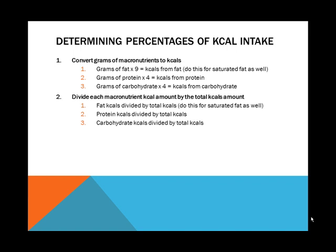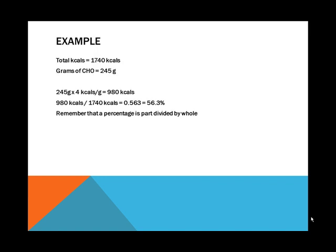Once we do that, if we know the total calories, we just divide the fat calories by the total calories, protein calories by the total calories, and carbohydrate calories by the total calories. When looking at a percentage, it's simply part divided by the whole. We'll go through this with each one of the nutrients.